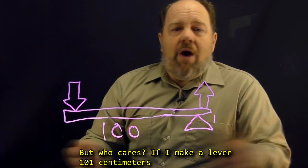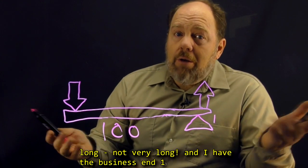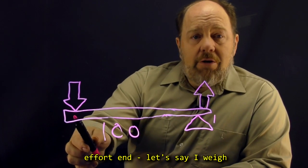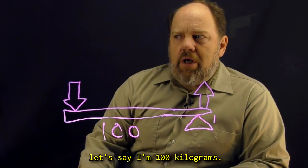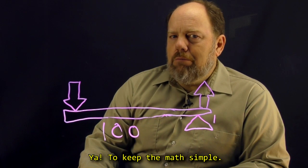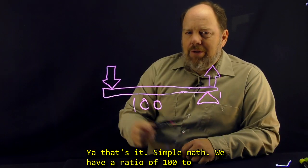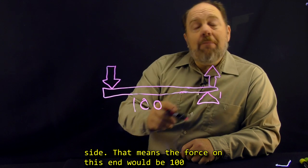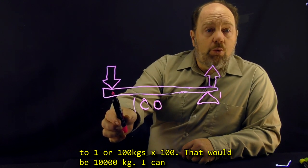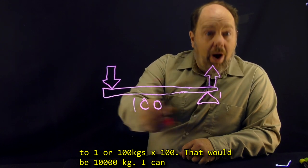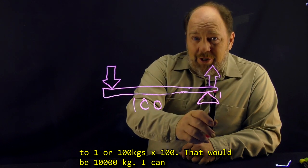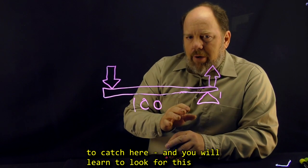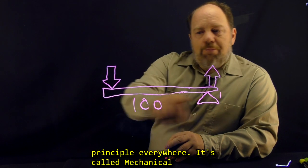But who cares? If I make a lever 101 cm long, not very long, and I have the business end 1 cm from the fulcrum, and I use my body weight on the effort end, let's say I weigh, well, let's say I'm 100 kg to keep the math simple. So we have a ratio of 100 to 1. 100 cm on this side of the fulcrum, 1 cm on this side. That means the force on this end would be 100 to 1, or 100 kg times 100. That would be 10,000 kg. I can lift an entire car off the ground. And here's the very important principle you need to catch here. You will learn to look for this principle everywhere.